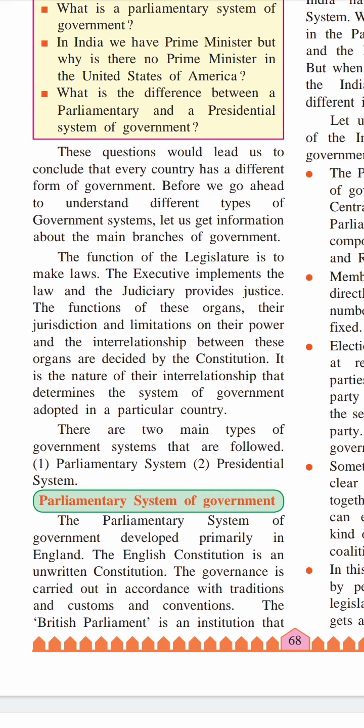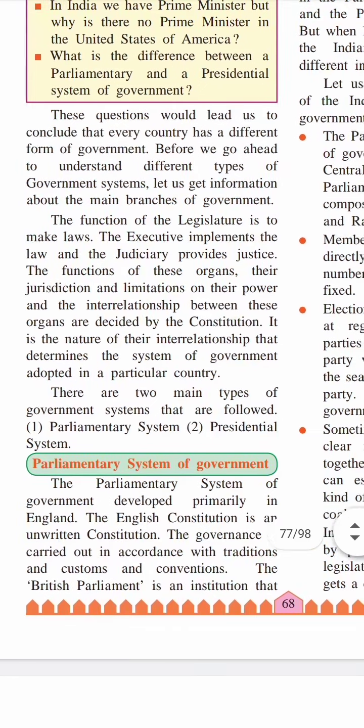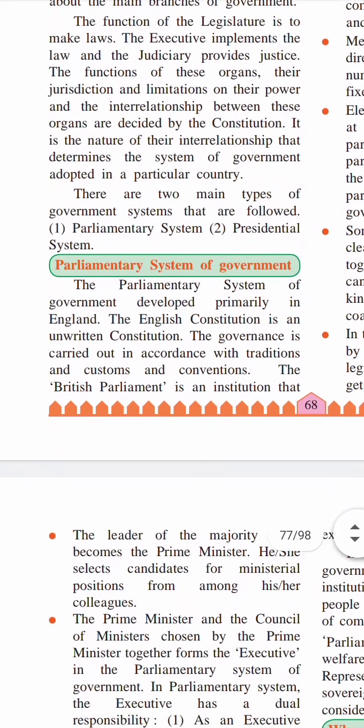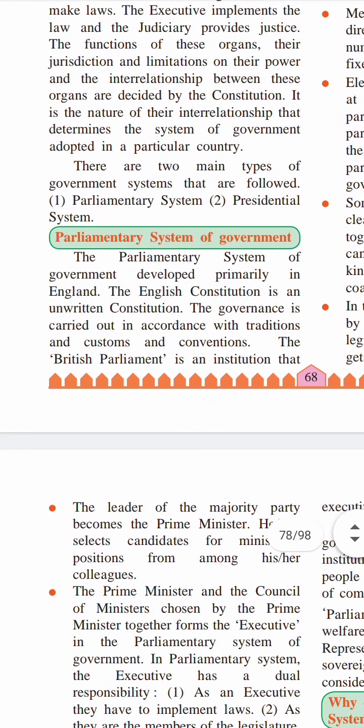There are two main types of government systems that are followed in this world: one, the parliamentary system of government, and the other, the presidential system of government.